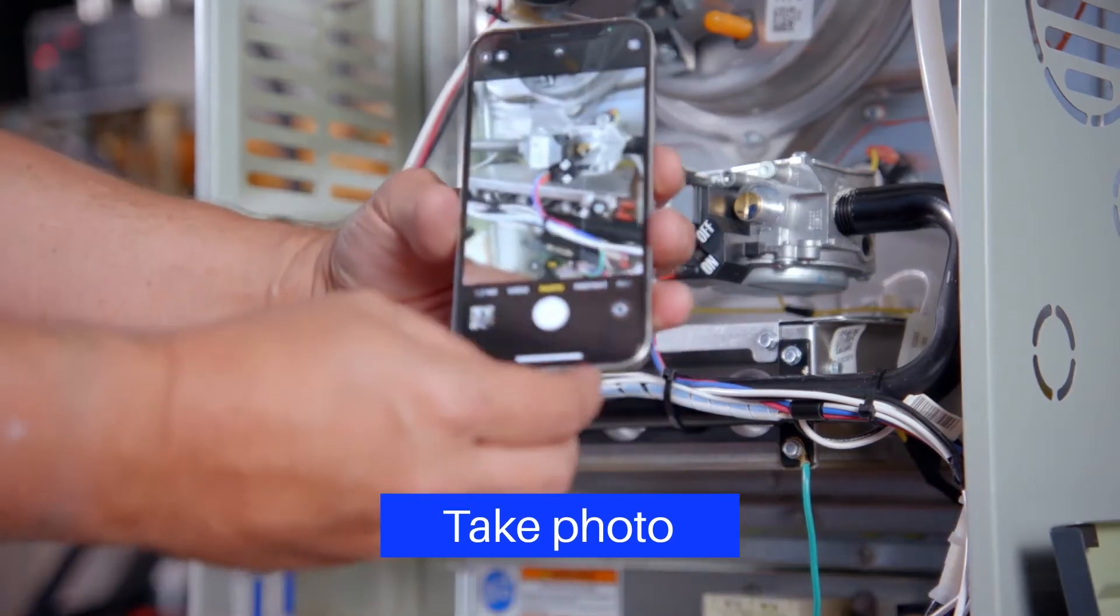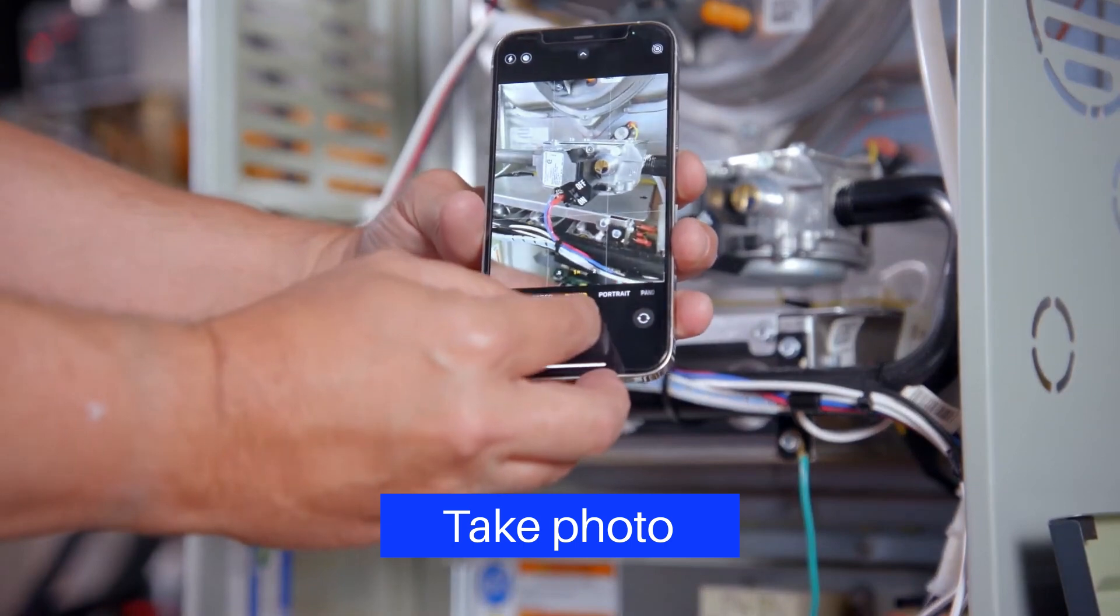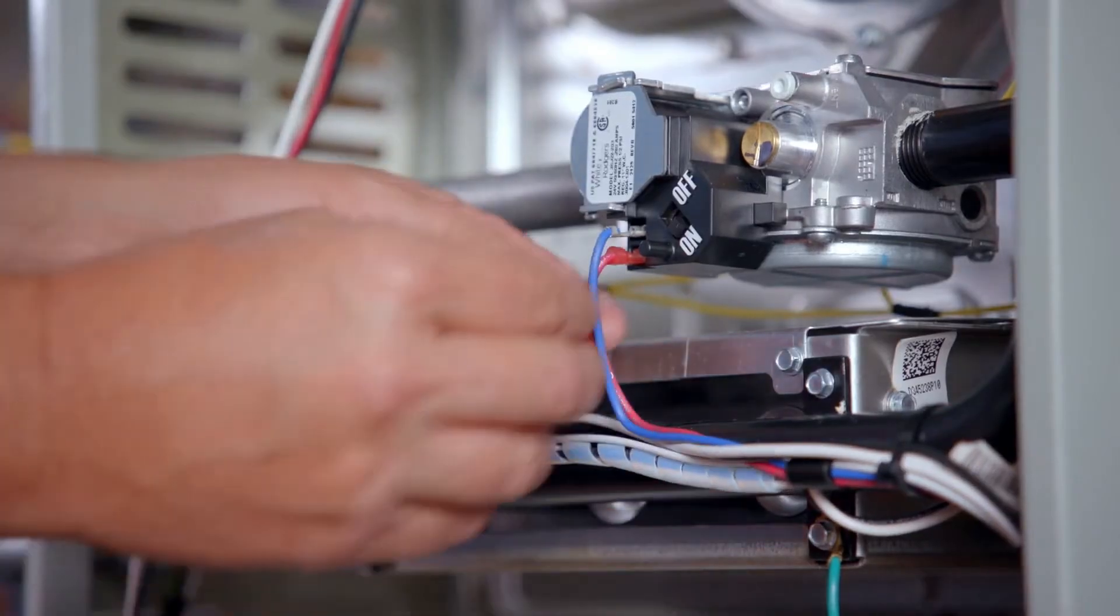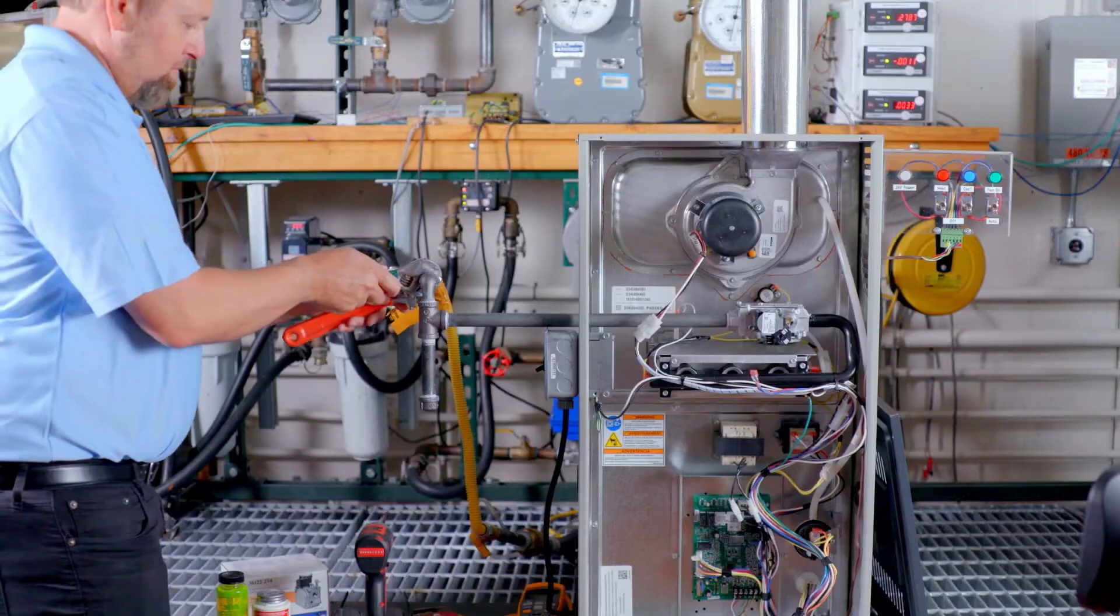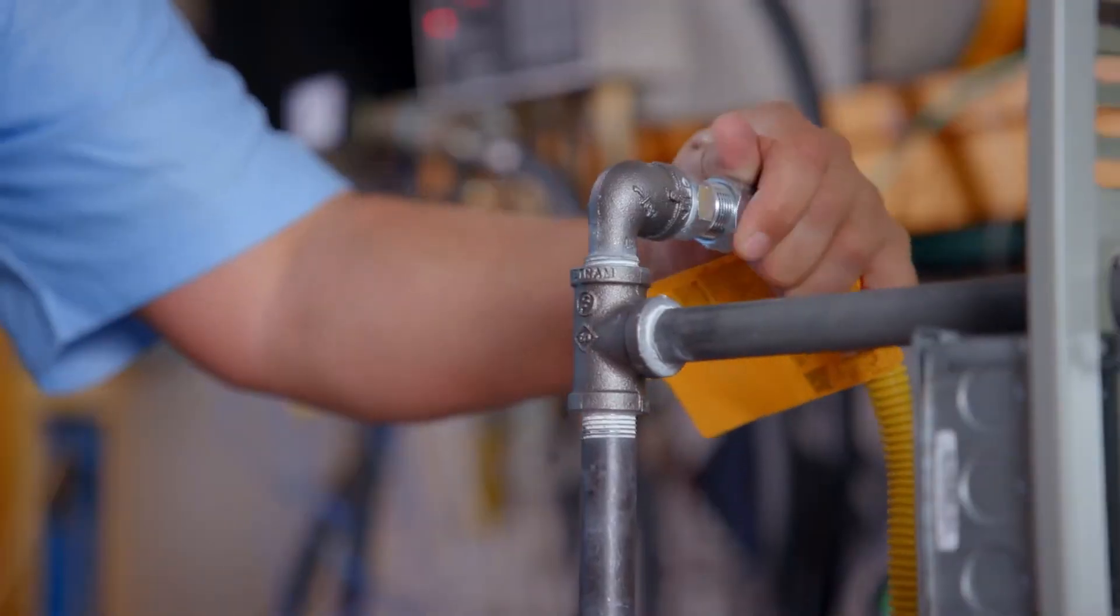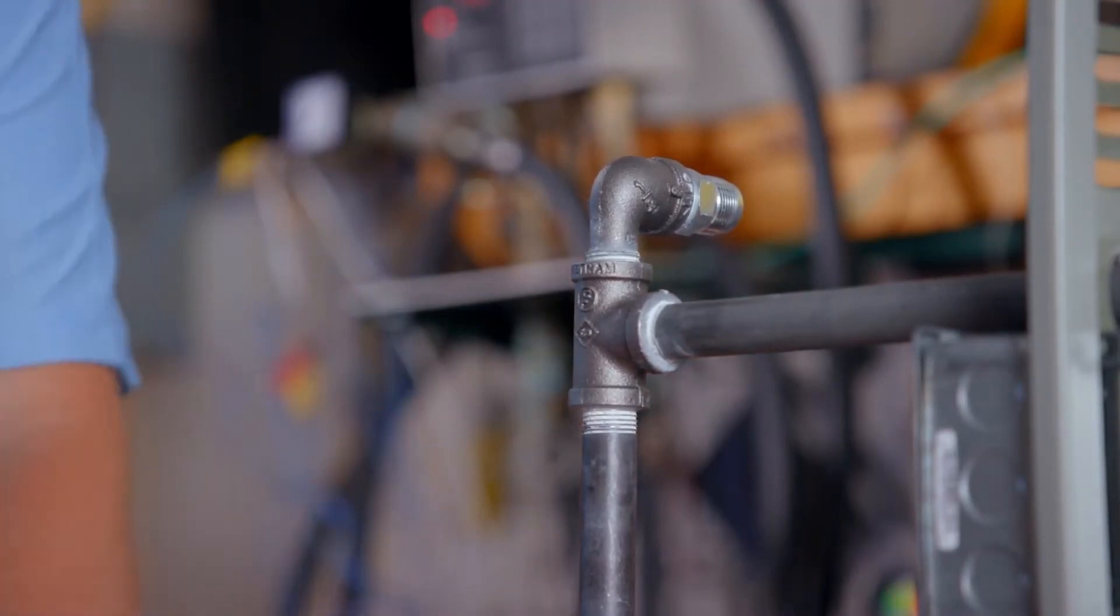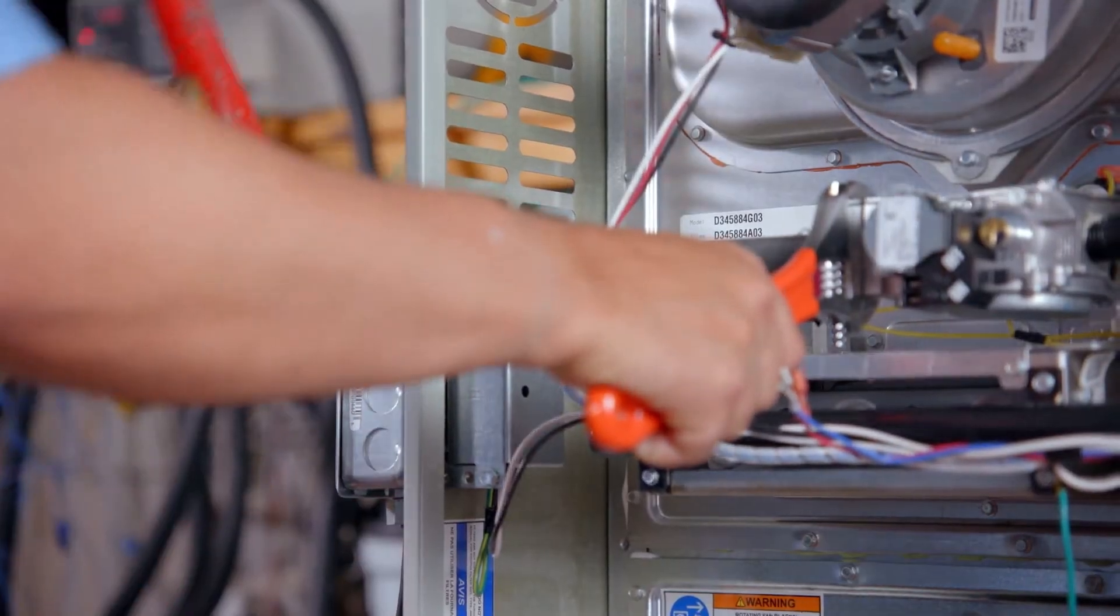Take a picture of the existing valve for reference before removing any wires. Disconnect and remove the two 24-volt wires from the old valve. To remove the existing gas valve, disconnect the gas line from the furnace and remove the inlet pipe making sure the valve is secure during the process.